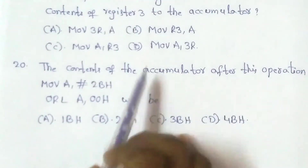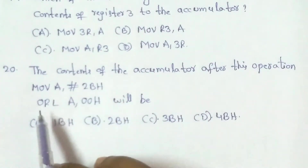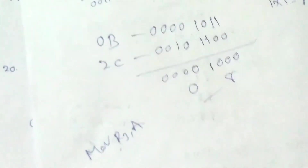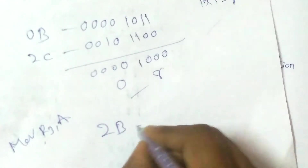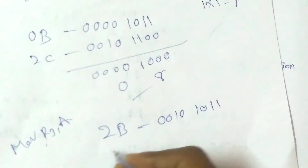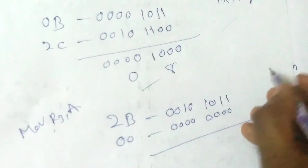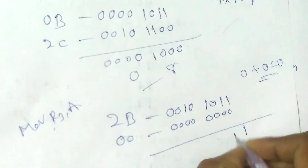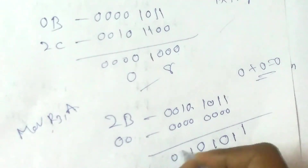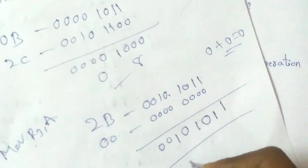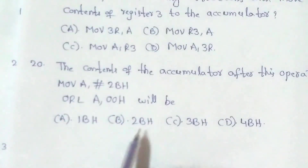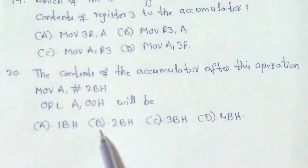Next question: What are the contents of the accumulator after MOV A, #2BH; ORL A, #00H? ORL performs a logical OR operation. 2BH = 0010 1011; 00H = 0000 0000. OR operation: 0010 1011 OR 0000 0000 = 0010 1011 = 2BH. Options: A) 1BH; B) 2BH; C) 3BH; D) 4BH. The right answer is option B, 2BH.